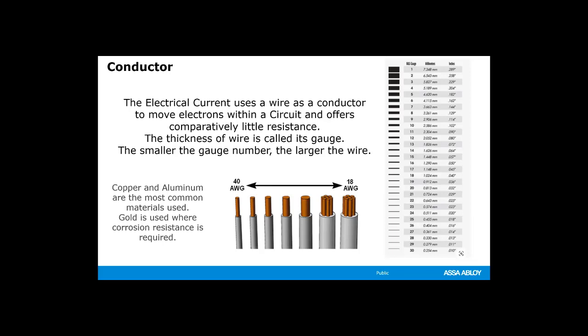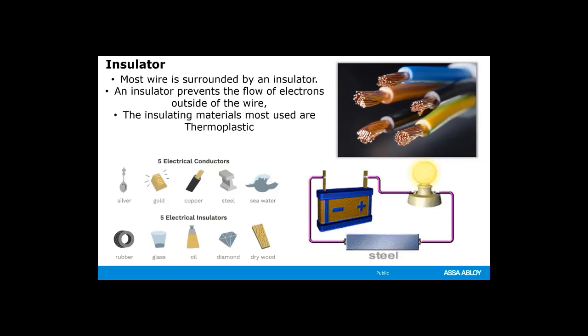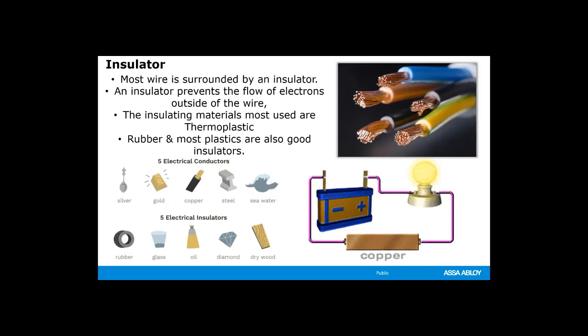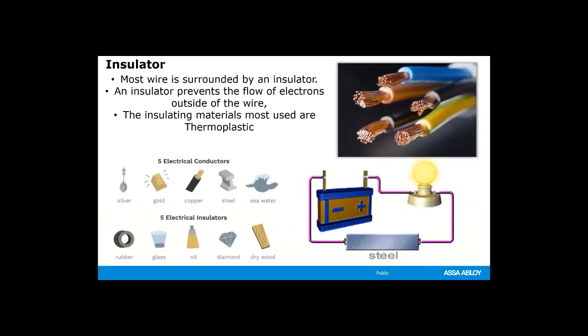Generally, stranded wire is used on low voltage systems using 12 or 24-volt power supplies, as we do in the architectural hardware industry. Electricity always flows on the outer surface of wires, and that's why stranded wire provides much more surface area and allows the greater flow of electrons. Most wires are surrounded by an insulator. An insulator has very few electrons, so it opposes the flow of electrons. An insulator prevents the flow of electrons outside of the wire. The insulating material most frequently used is a thermoplastic, because thermoplastics will burn but they will not melt when they heat up. Rubber and most plastics are also very good insulators.